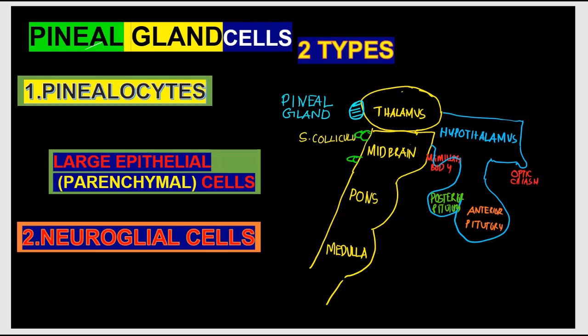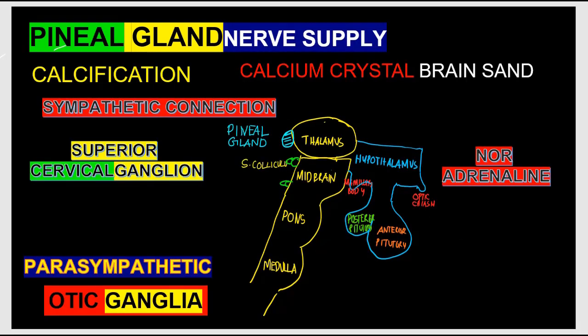The cells of the pineal gland include pinealocytes — atrophied photoreceptor-like cells that are large epithelial cells and the main parenchymal cells of the gland. Other cells include neural glial cells, interstitial cells, perivascular phagocytic cells, and peptidergic neurons. With increasing age, these glands become calcified — calcium crystals are deposited, commonly called 'brain sand.'